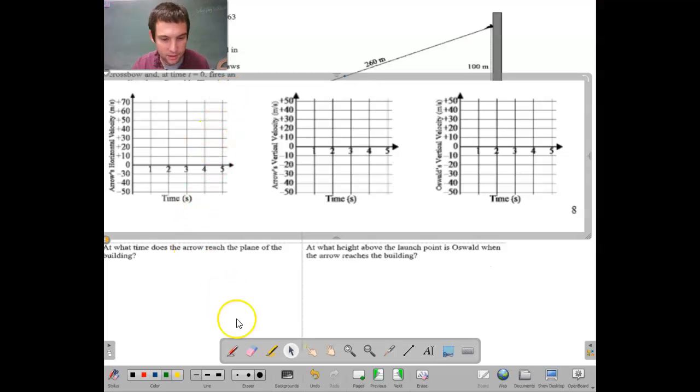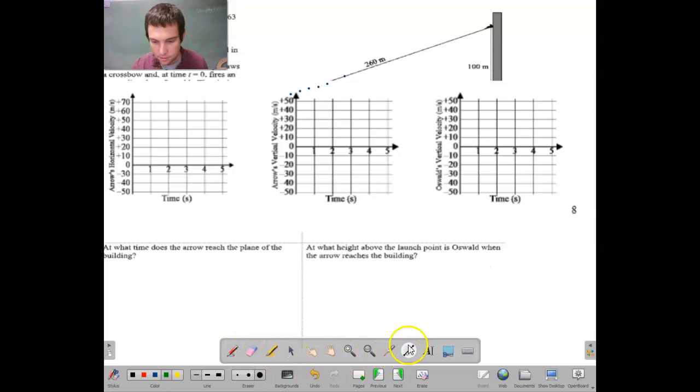The arrow's horizontal velocity we said was 60 meters per second. So that is going to be the entire 2.5 seconds.